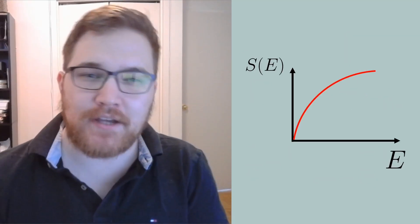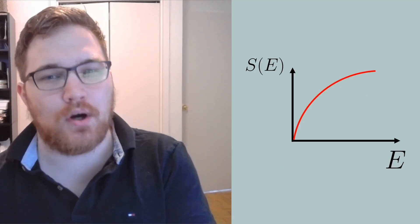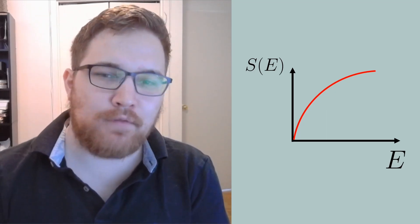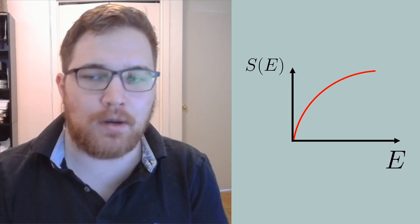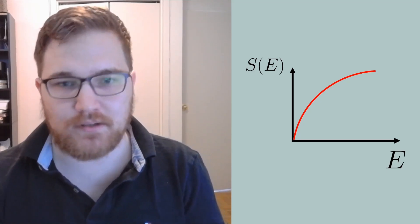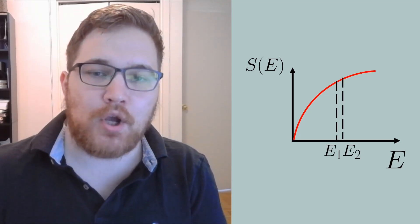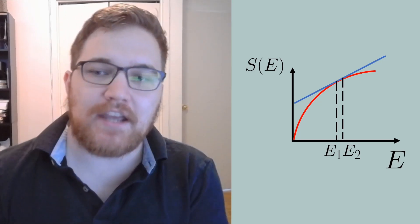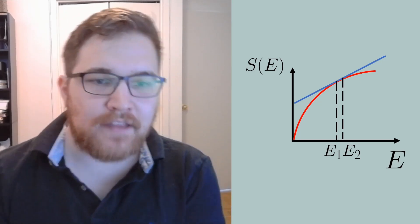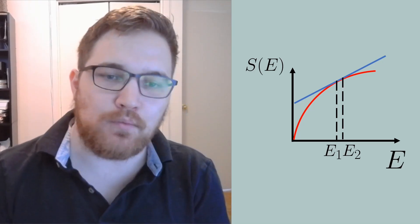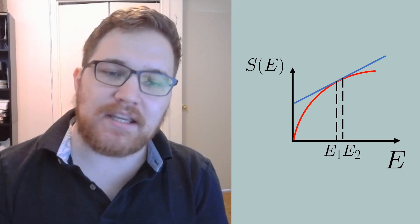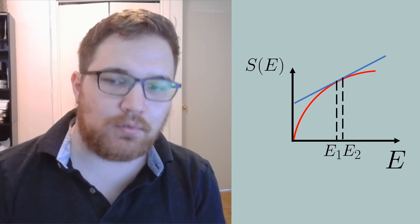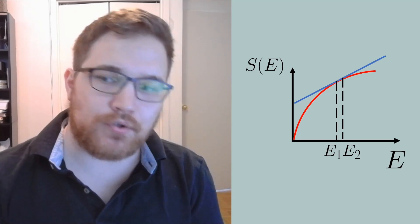For a typical situation, as energy is increased, entropy also increases. This makes sense, right? The more energy I have, the more ways I could potentially spread it out amongst the particles in my system. From this graph's perspective, we can show the inverse temperature as the slope of the blue line intersecting the curve at the appropriate points defined by E1 and E2. The key takeaway here is: as long as increasing energy keeps increasing the number of available microstates, the entropy also increases.